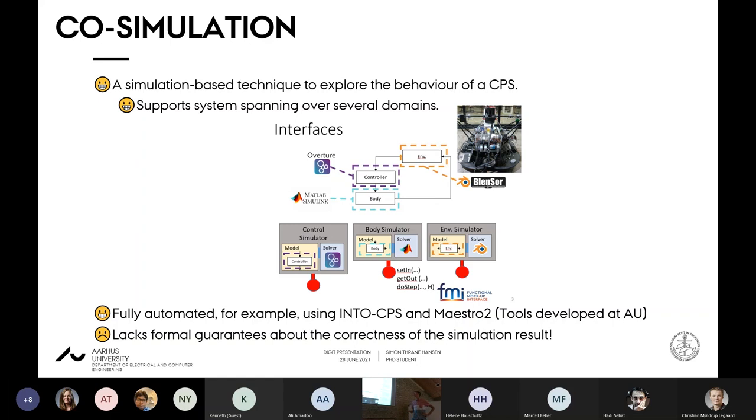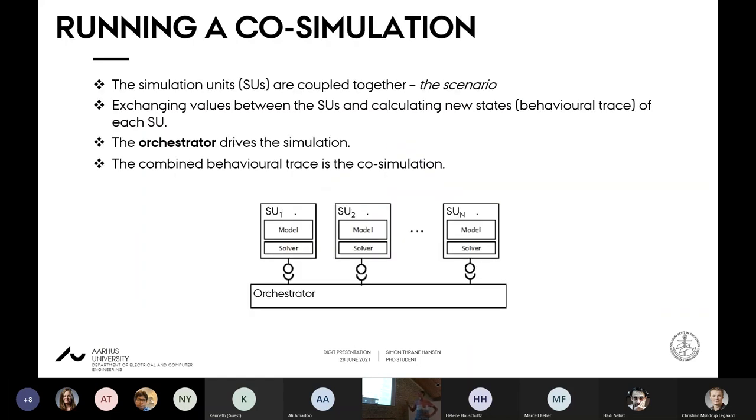What you're really doing when running these kinds of simulation is developing the different parts of the system. We call them simulation units. Then you couple them together to get the complete simulation. In the real world, you have a simulation unit and you cover them with an orchestrator that dictates how each component should behave during the simulation. Then you take each behavioral trace of the individual component and combine them, and that's the co-simulation.